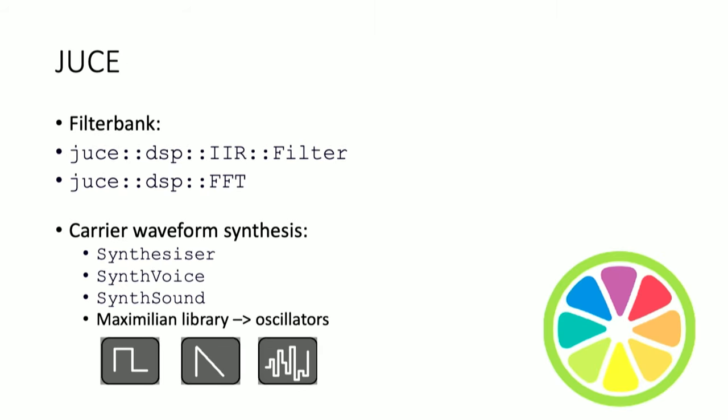With that in mind, how do we create a real-time vocoder plugin? For that, I turned to JUCE, the JUCE framework. There are a number of helpful classes which facilitated the development of my plugin. For the filter bank, the IIR filter and FFT classes provided intuitive and easy-to-use methods. For the synthesis of the carrier waveform, the Synthesizer, SynthVoice, and SynthSound classes were super helpful. I also used the Maximilian library to create oscillators with different waveforms, including square wave, sawtooth, and noise.